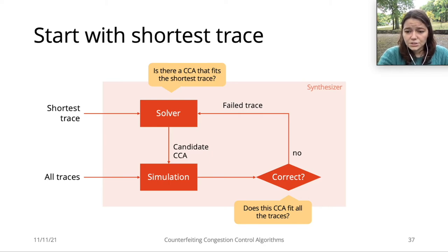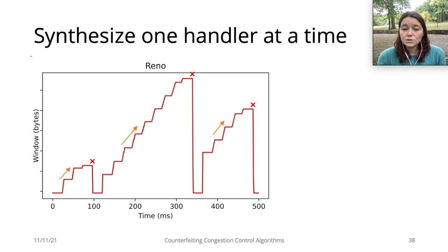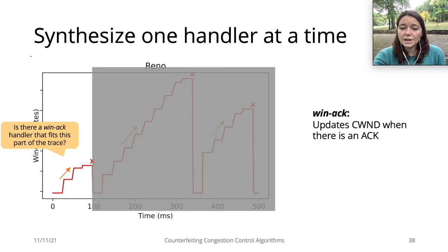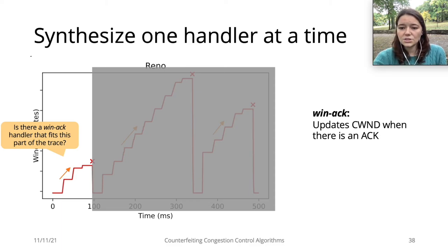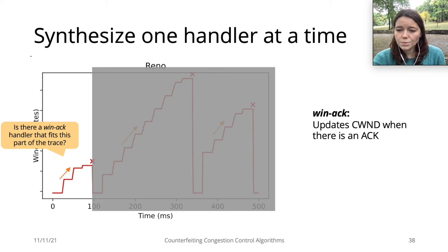If the CCA already fits the traces, then we are done and the synthesizer can simply return the CCA. To simplify solver calls even further, we synthesize each handler function separately. We start by considering just the part of the trace until just before the first packet times out, and ask the solver: is there a WinAC handler that fits this first part of the trace? This simplifies the solver's job because it does not need to reason about two handler functions at the same time. Once a WinAC function is found, we fix it and ask the solver for a timeout handler that fits the whole trace.